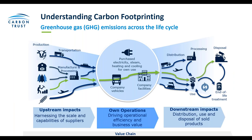Both scope one and two lie within your own operations control, covering company facilities, company vehicles and purchased electricity, steam and heating. Scope three extends further upstream and downstream your value chain, covering almost everything in the whole value chain such as manufacturing, processing, transportation of your suppliers, and also distribution and waste management.